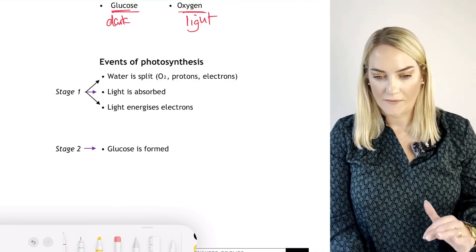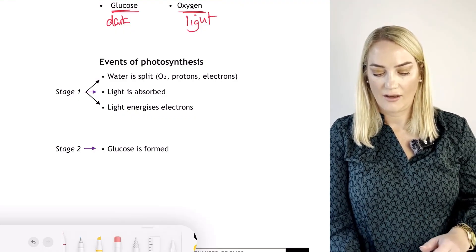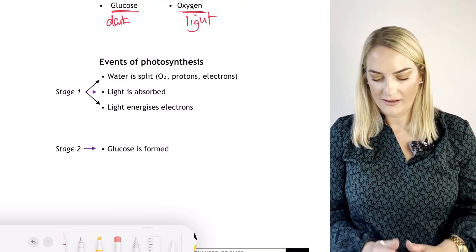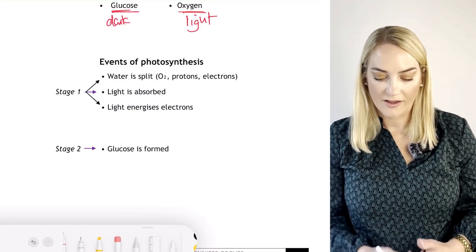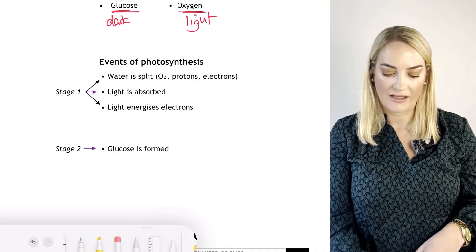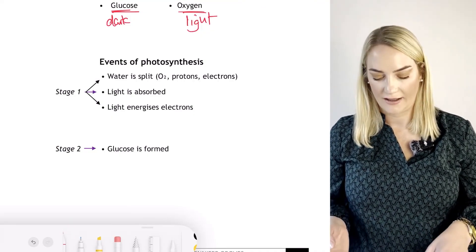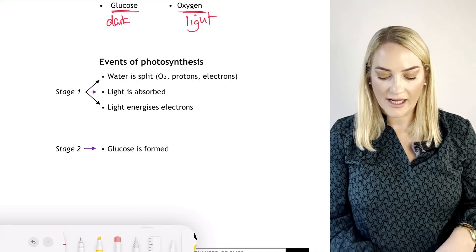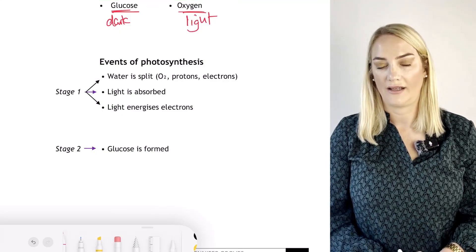A summary of the events: in Stage 1, the light stage, water is split by photolysis into oxygen, protons, and electrons. Light is absorbed and that light energy energizes the electrons. In Stage 2, the dark stage, we make glucose.